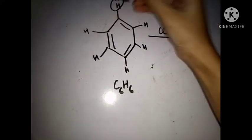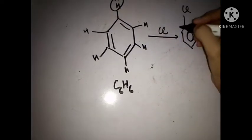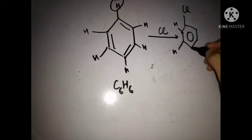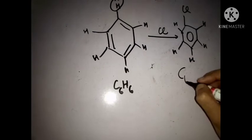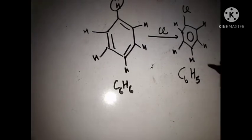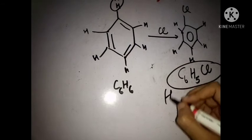The new compound formed is chlorobenzene because one chloro and rest benzene, so it is chlorobenzene and this is an example of haloarene.